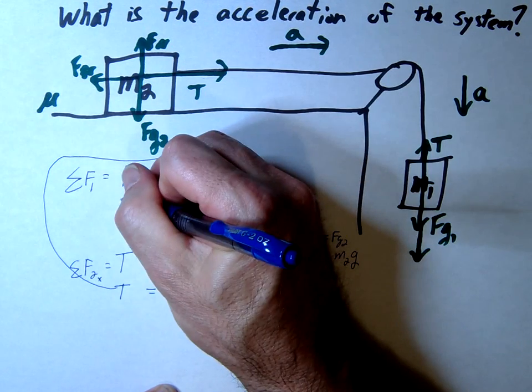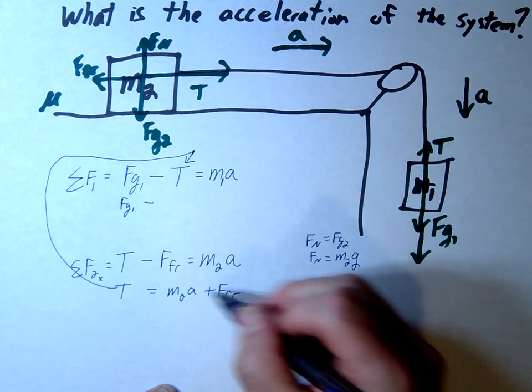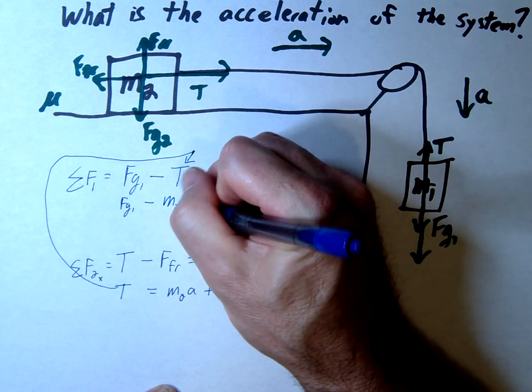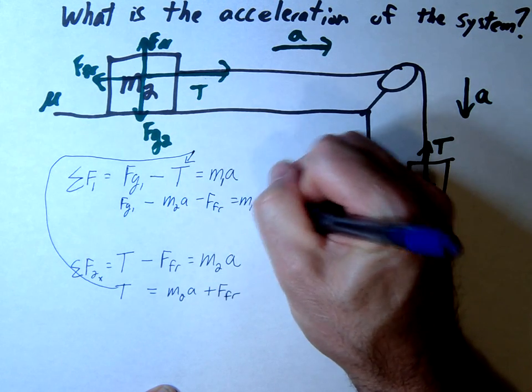We have FG1 minus the substitution, which gives us m2a plus friction, equals m1a.